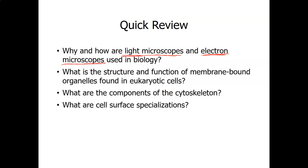What is the structure and function of membrane-bound organelles found in eukaryotic cells? Remember, all organelles we learned are membrane-bound except for ribosomes. In animal cells, the centrioles are also not bound by a membrane. Everything else — the nucleus, nucleolus, Golgi complex, endoplasmic reticulum, mitochondria, lysosome, and chloroplast — are all membrane-bound organelles.